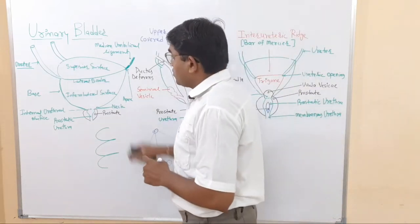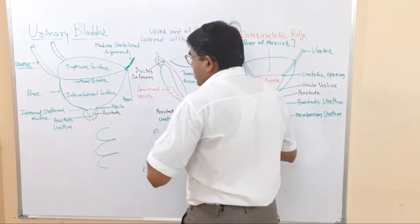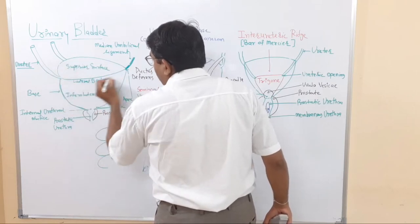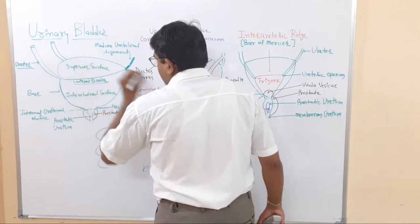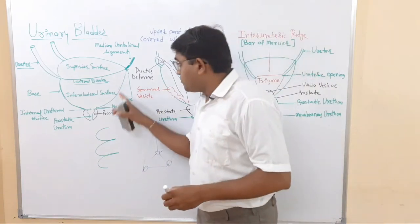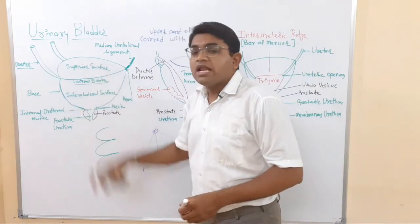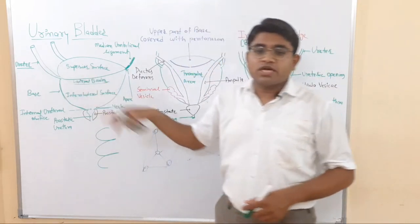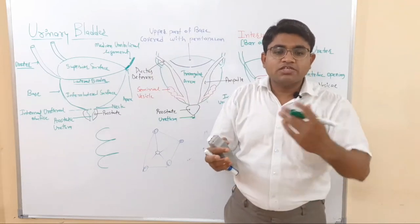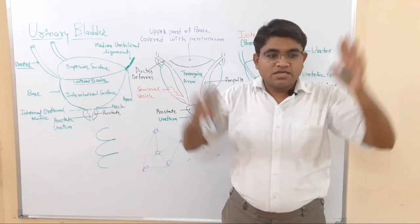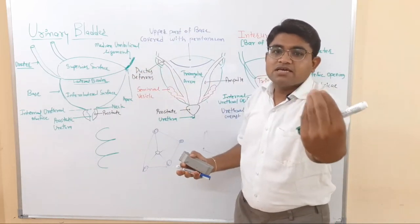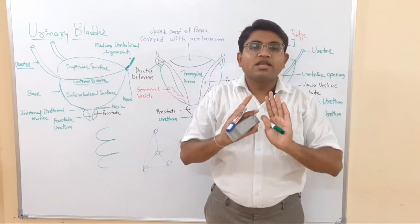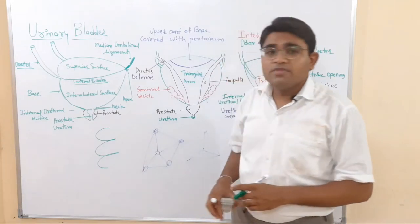In the empty condition there are four borders: an anterior border, a posterior border, and two lateral borders. It also has three surfaces: one superior surface and two inferolateral surfaces. So in the empty condition the external features include one apex, one base, four borders, and three surfaces.